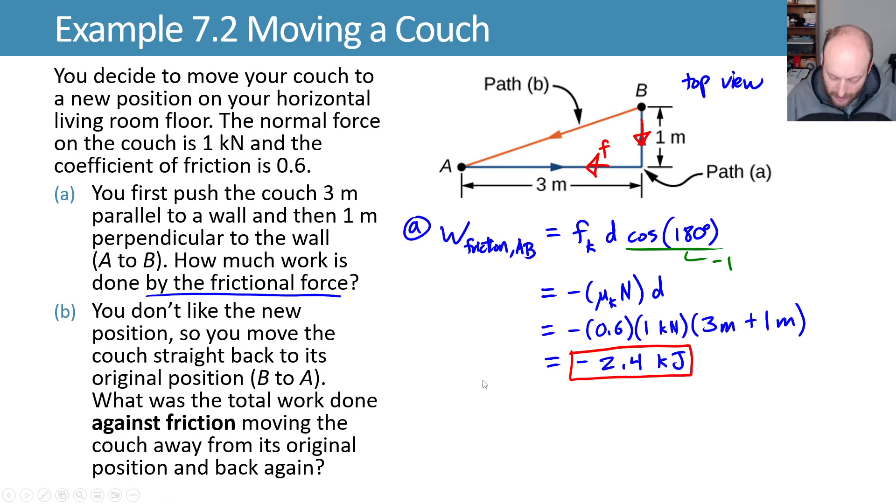All right. We want the work done against friction. So now we'll say the work done by friction, and then we'll just take the negative of that to get the work done against friction. The work done by friction coming back from B to A is going to be the same thing that we did before, but now with a different path length. Now it's going to be this path length, which we can get from a right triangle using the Pythagorean formula. The length on this hypotenuse will be the square root of 3 squared plus 1 squared in meters.